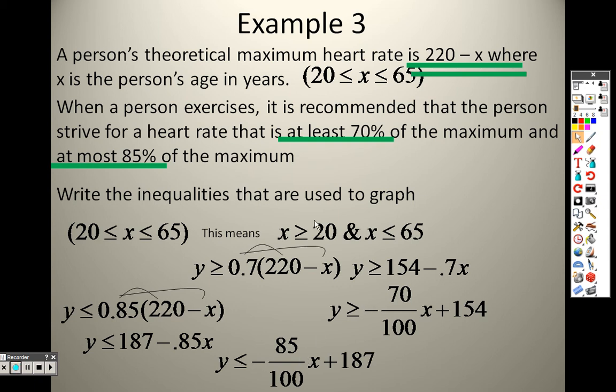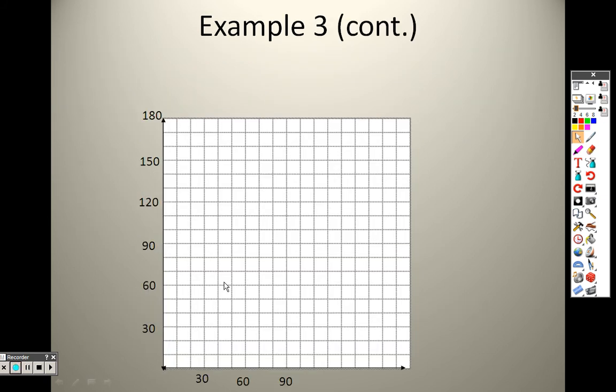I have 1, 2, 3, 4 different equations. Those are for the heart rate down here, and those are for the age. Each of those goes by 10 on the bottom, and each of those goes by 10 up on the side, and I just have everything marked.